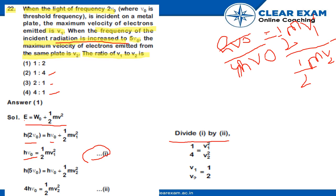So, hv0 cancels, half m cancels. So, 1 upon 4 equal to v1 whole square upon v2 whole square.